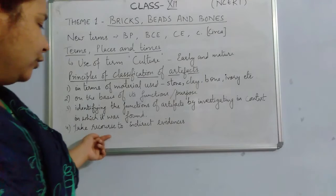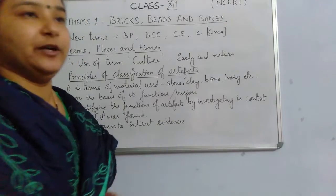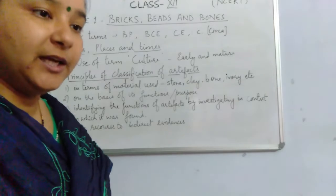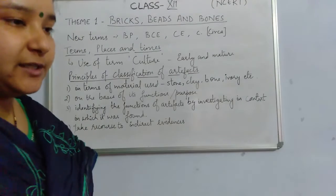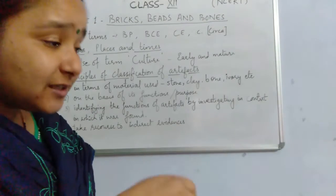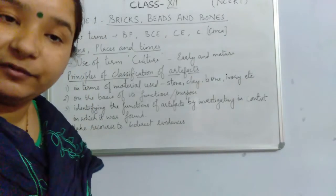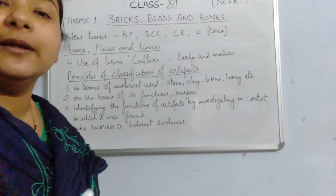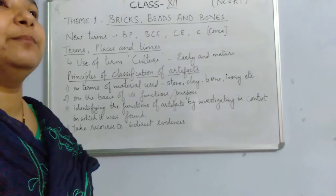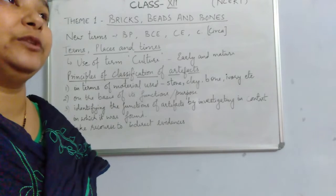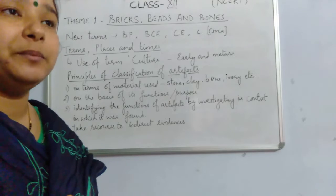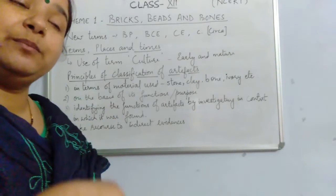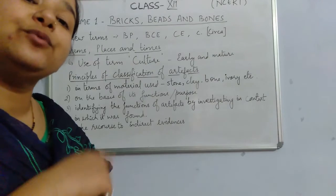Sometimes we get an artifact but we do not understand its purpose or where it was used. In such cases we have to depend on indirect evidences. For example, when we talk about Harappan culture, we don't have any direct evidence to prove that these people were using cotton cloth. There is no direct piece of cotton cloth preserved as evidence.